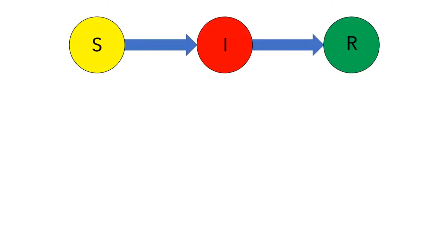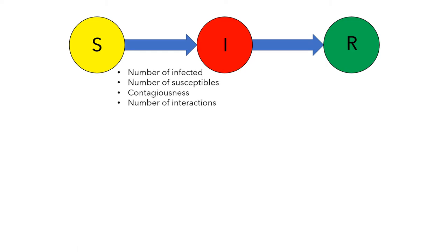In the previous videos, we thought about splitting a population into groups of susceptible, infected, and removed people. We thought about the factors that influenced transitions between these groups, including the number of infected and susceptible people, the contagiousness of the disease, and the number of interactions that actually happened between people, and various factors that affected the recovery time.